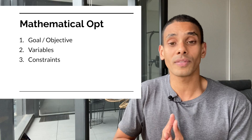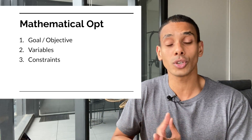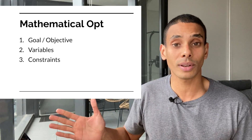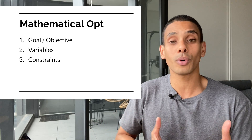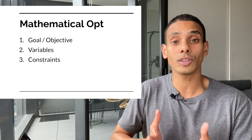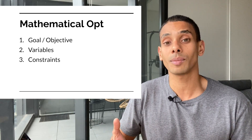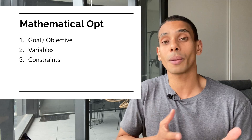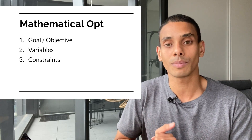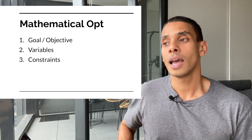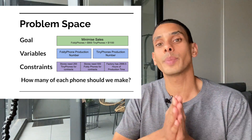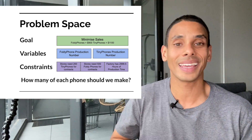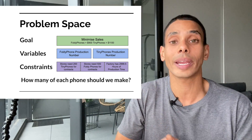A good example of this is how much of each product should we produce if we've got a constrained factory floor. Another really good example is how should we schedule people on a roster so that we maximize our productivity but also meet the requirements of our scheduling process. The specific problem we're going to be solving has three key things: goals, variables, and constraints.